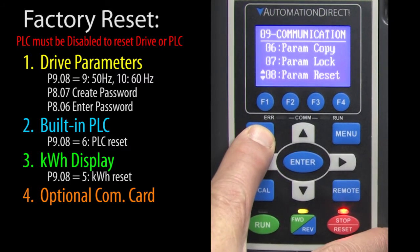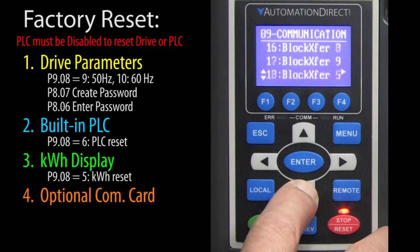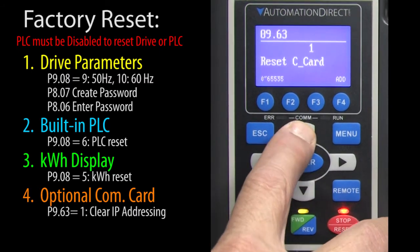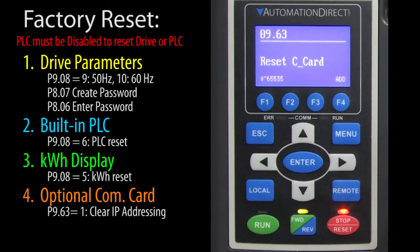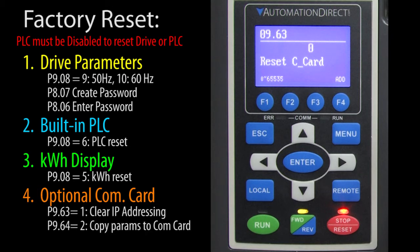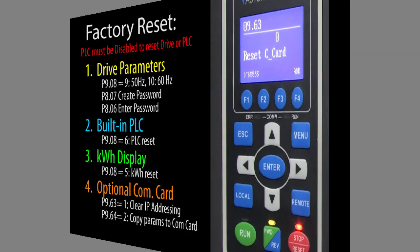To reset the communications cards, go to parameter 963 and enter a 1. This will reset the IP addressing that was copied to the card from the drive's P9 parameters. The drive's P9 parameters will still be in the drive, so you can simply copy them back to the communications card after you reset it using parameter 964 and entering a 2.